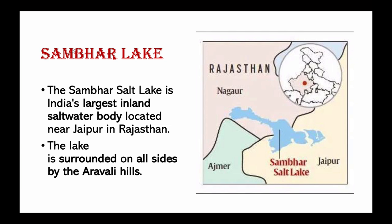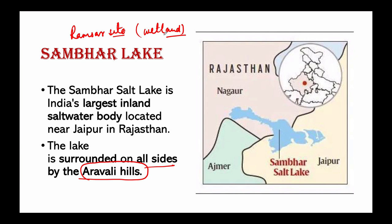Sambar Lake is India's largest inland salt water body located in Rajasthan. This lake is surrounded on all sides by the Aravalli Hills. It is a source of most of Rajasthan's salt production. Importantly, it is a Ramsar site, recognized as a wetland of international importance, as it is a key wintering area for tens of thousands of flamingos and other birds that migrate from northern Asia.